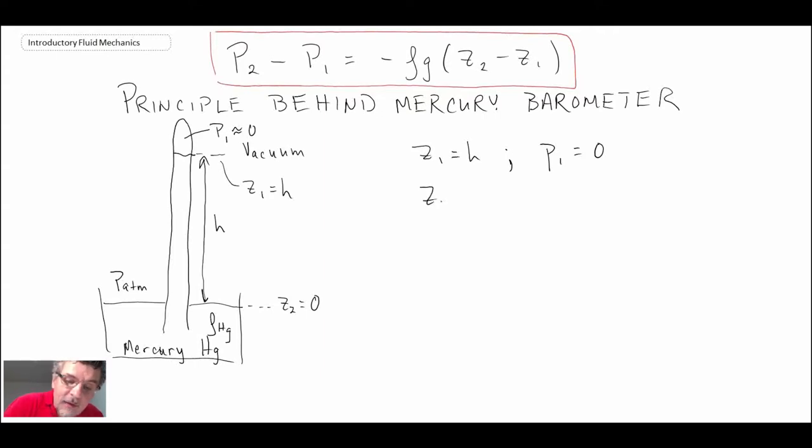And at Z2 equals zero, we know that the pressure there is equal to the atmospheric pressure. And remember with a barometer, this is what we're after. We want to be able to measure the atmospheric pressure. So that's the purpose of the barometer.